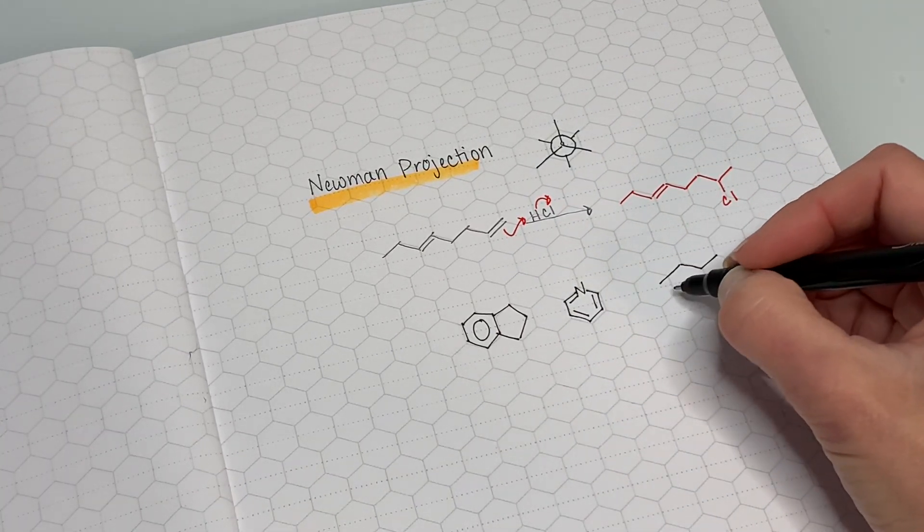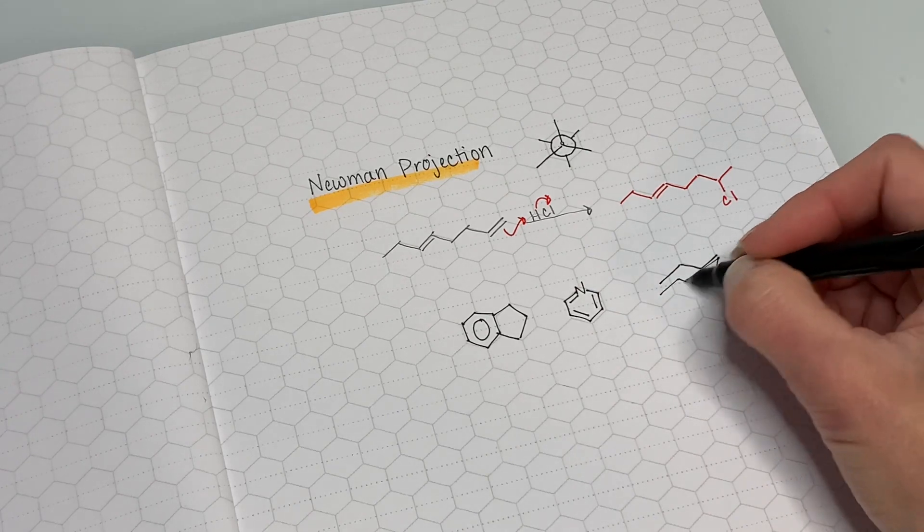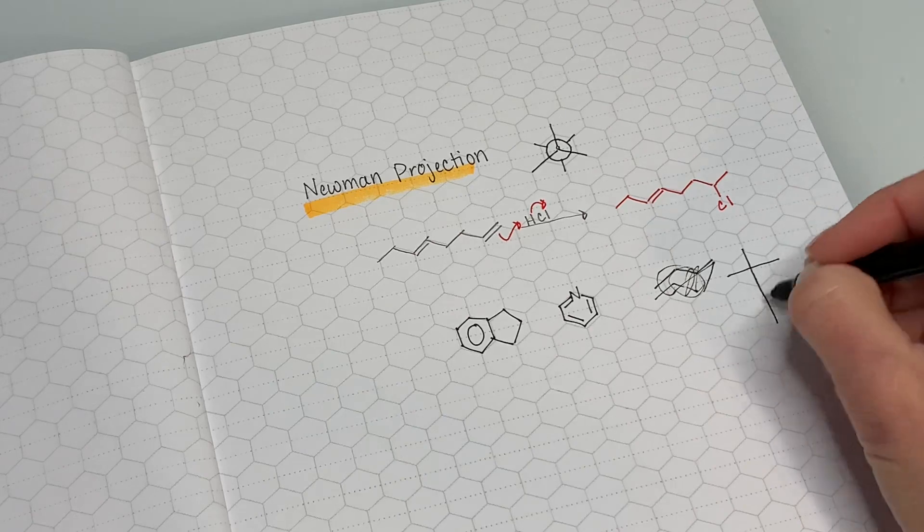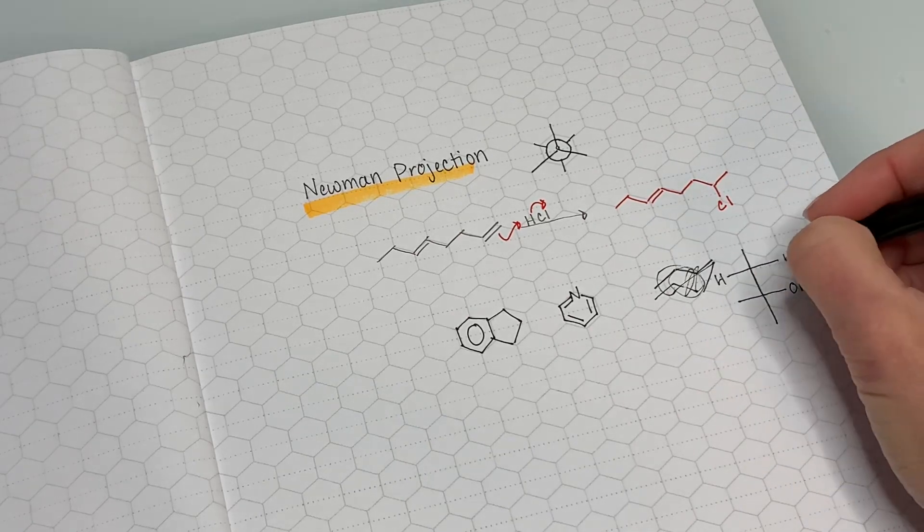I also took a couple of attempts at drawing a chair conformation. Really failed miserably. I'm sure there's a technique for drawing chair conformations. Fisher projection turned out pretty well.